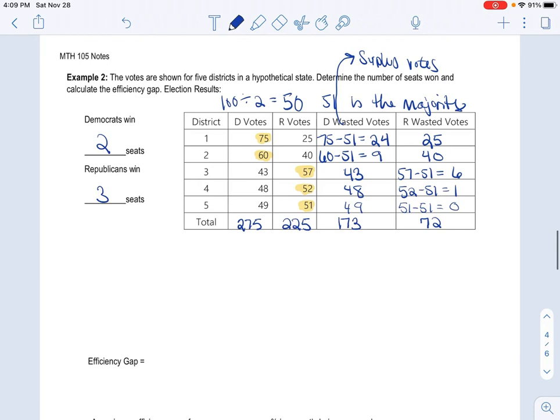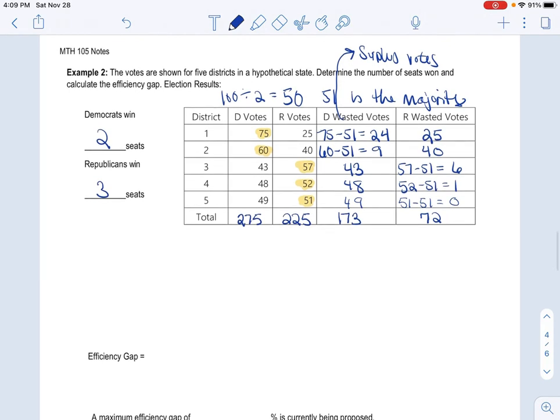All right, so let's look at this. The efficiency gap says it doesn't matter order, okay? It's just nice to put large minus big, so then you always get positive. So my efficiency gap, I'm going to do 173, because it's your surplus votes for one party, take away your surplus votes for another party. And we need to divide it by the entire number of voters. So that actually comes from right here. So total voters, or votes, I could say, 275 plus 225 is 500.